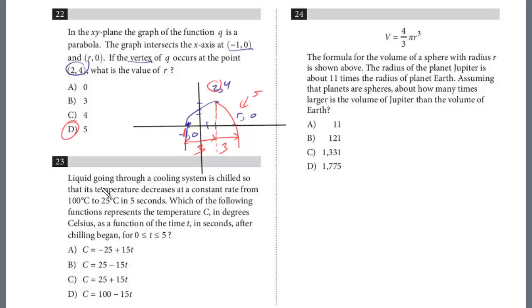Let's take a look at 23. Liquid going through a cooling system is chilled so that its temperature decreases at a constant rate from 100 degrees to 25 degrees Celsius in 5 seconds. Which of the following functions represents the temperature C in degrees Celsius as a function of the time T in seconds after chilling began, for T between 0 and 5?